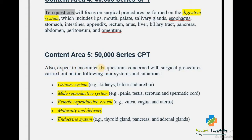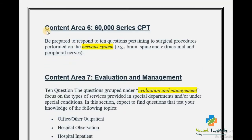Content Area 5 covers the 50,000 series of the CPT book. Expect 10 questions concerned with surgical procedures carried out on the urinary system, male reproductive system, female reproductive system, maternity and delivery codes, and the endocrine system.